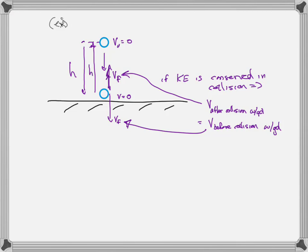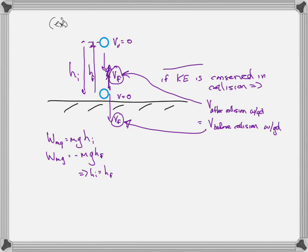If the speed right before it hits the ground equals the speed right after — noting that the direction changes — then it's got to go back up to the same height. You can figure that out from energy conservation: the work done by gravity on the way down is equal to MGH, and if all the energy is given back, then the work done by gravity on the way up must equal minus MGH. So H initial must equal H final. It's going to go back up to the same height it started from if the kinetic energy is conserved in the collision with the ground.